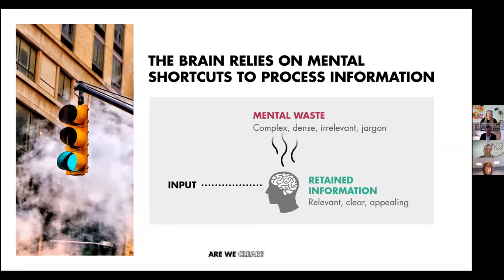When you can't really read all of that information — it's completely impossible. Our brain relies on mental shortcuts to process information and take it away quickly. We're all scrolling on iPhones and iPads, scrolling through Twitter, and you need something that catches your eye so you don't have all that mental clutter. It's our job as communicators to ensure that the information we really need to get through is the information that's retained — relevant, clear, and appealing.